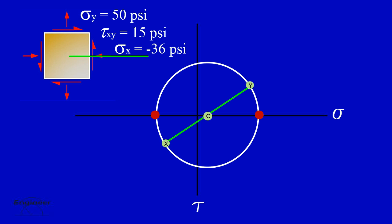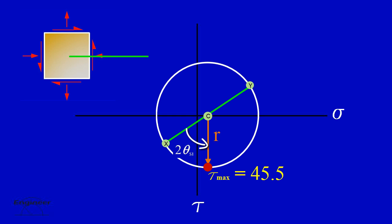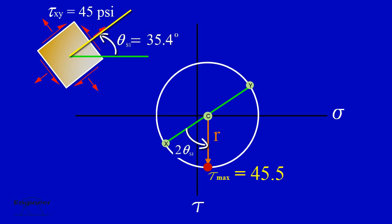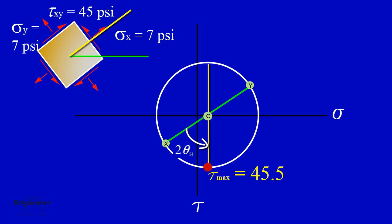But what if you wanted to know the angle of rotation to obtain the maximum shear stress? The maximum shear is equal to the radius and occurs at the very top and very bottom of Mohr's Circle. From the X-Y line, the angle to the maximum shear is positive on Mohr's Circle because the rotation is counterclockwise. For the element to rotate in a positive direction, it also has to rotate counterclockwise. Calculate the angle theta. The shear stress on the element at the calculated angle is 45.5 pounds per square inch. The normal stresses on the x and y faces equal the average normal stress at point C on Mohr's Circle, which is 7 pounds per square inch.